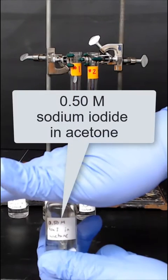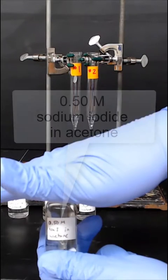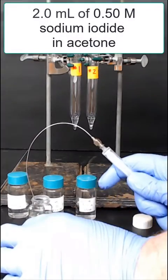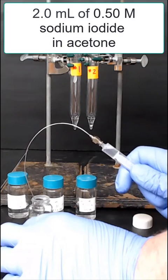Next, we'll add a 0.5-molar solution of the nucleophile sodium iodide in acetone. We're going to add two milliliters of this solution to each one of the reactions.